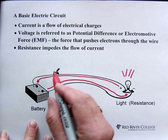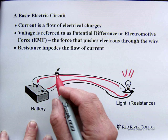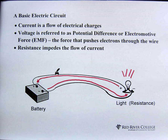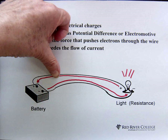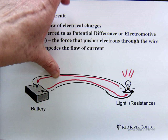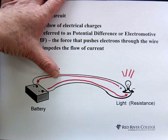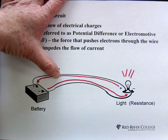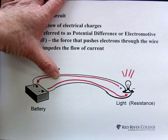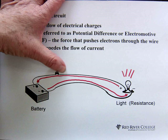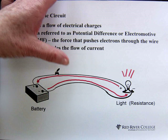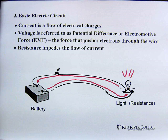Now, if this switch were open, there would be a complete break in the circuit, so no electrical charges would be able to move because they have nowhere to go. They can't jump across space. So we'd have to have a closed switch here to cause the electrical charges to move.